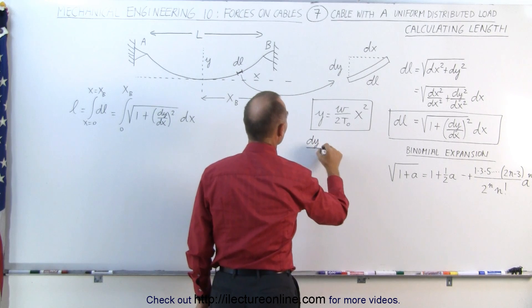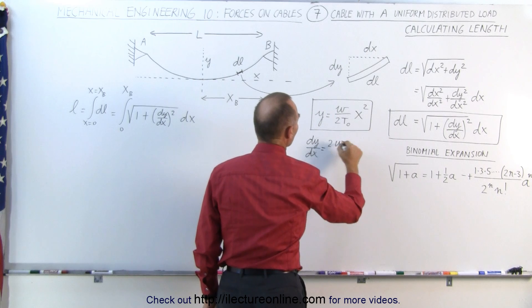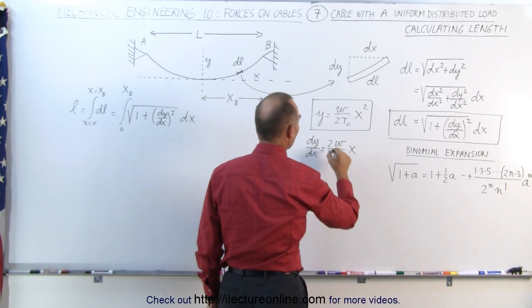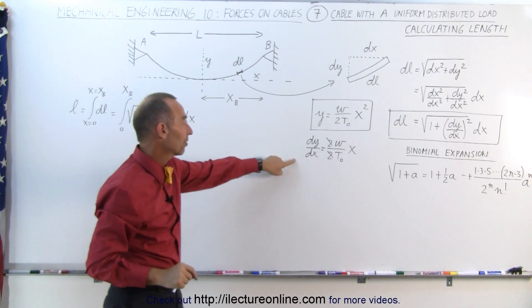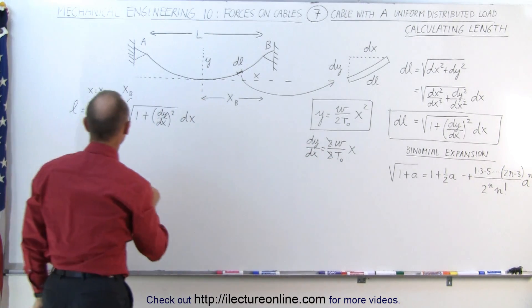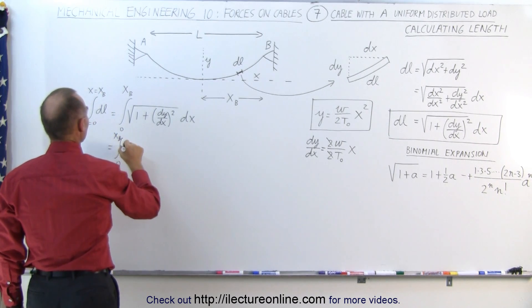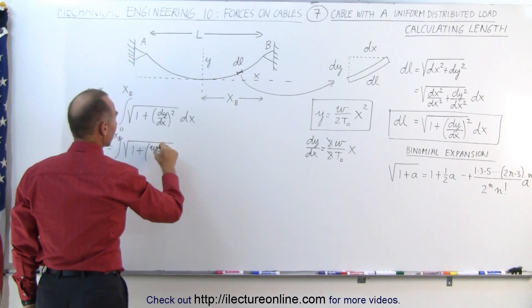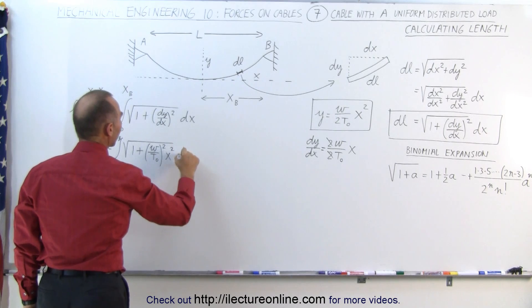DY/DX, therefore, is equal to 2 times the weight per unit length divided by 2 times the tension at the bottom of the cable times X to the first power. The 2's cancel out, and you can then see that is a good way of expressing DY/DX in only terms of X. So this can now be written as the integral from 0 to X sub B of the square root of 1 plus the quantity (omega/T sub naught times X) squared times DX.